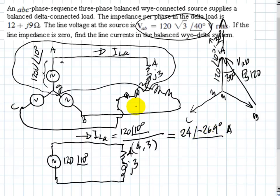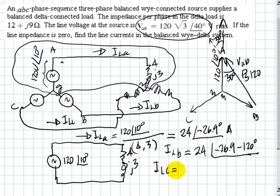That means I could find the others, and that is easy. ILB is 24 at negative 26.9 minus 120 degrees. And ILC is 24 at negative 26.9 plus 120 degrees. And those are amps RMS. And that would solve this exercise.